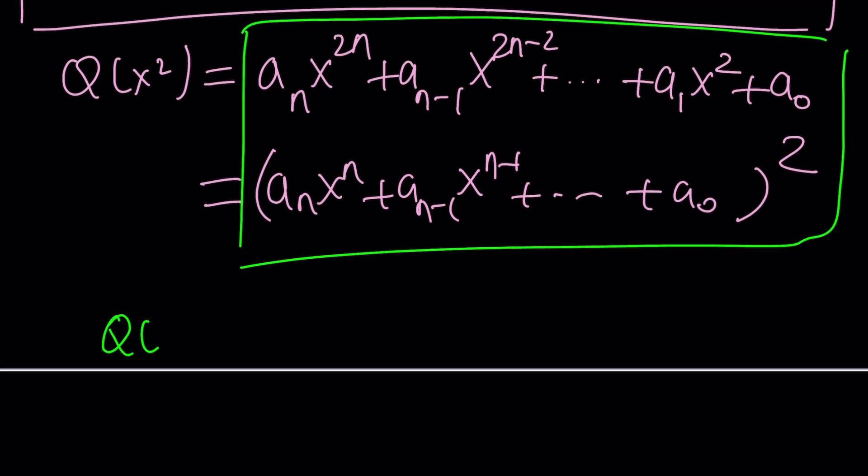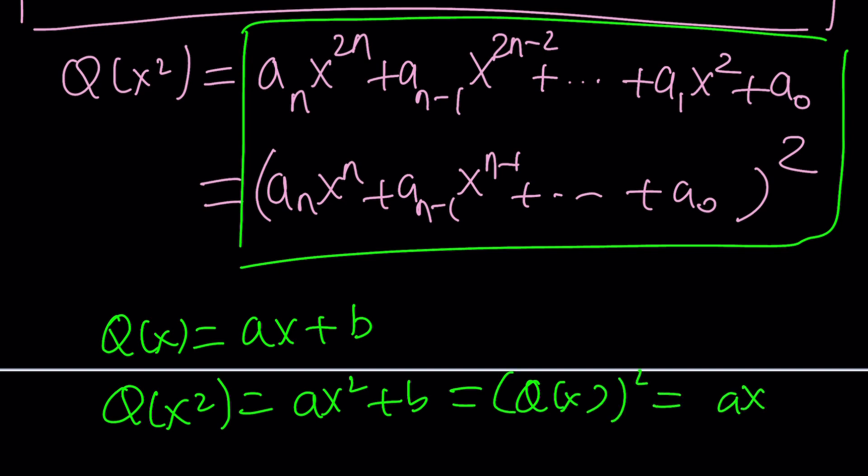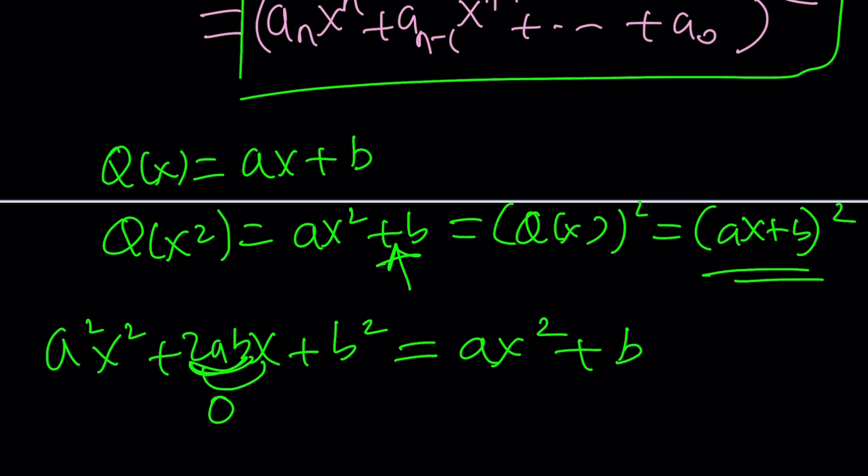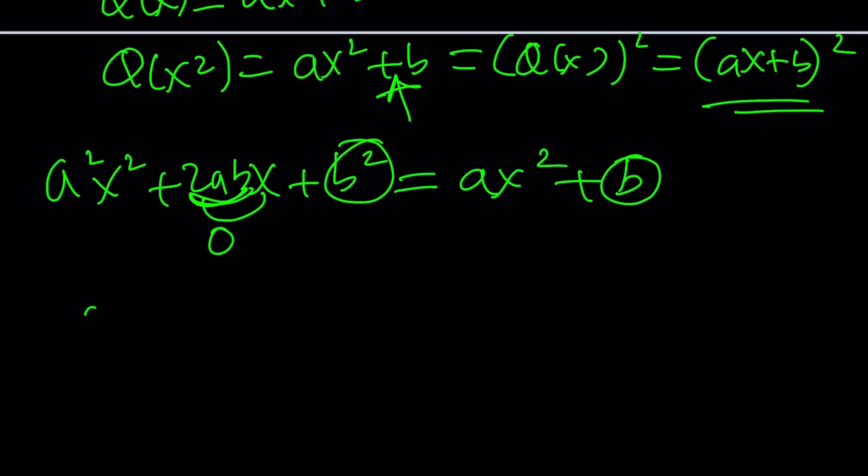What if Q is linear? So something like ax + b. Can I have Q(x²), which is ax² + b equal to Q(x) squared, which is (ax + b)² ? Let's go ahead and look at a simpler case because this will give us an idea. a²x² + 2abx + b² equals ax² + b. This tells us that there is no x term, so the coefficient of x must be 0. And the constant terms have to be equal. In other words, ab equals 0, which means a = 0 or b = 0.